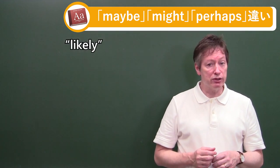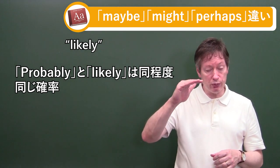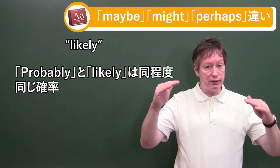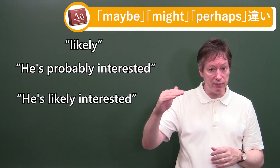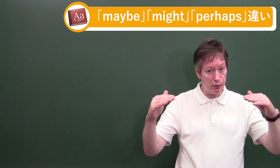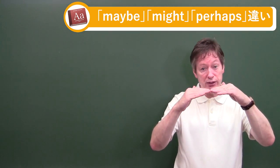Now another word that also will work here is likely. Probably and likely will probably, probably using the same adverb again, let's keep it at the same level. Let's keep it at the same level. So he's probably interested. He's likely interested. Pretty much at the same rate of probability.